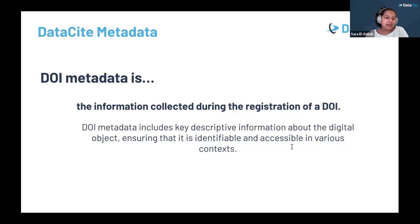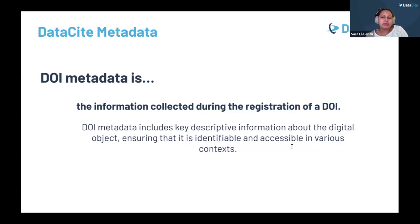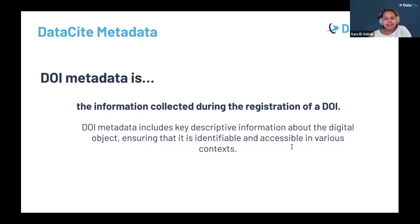There are several key benefits. First, it ensures that the resource can be reliably identified and cited. It can enhance discoverability by making the resource visible to services and platforms that index research outputs. This improves interoperability, enabling systems and platforms to work together seamlessly and making your metadata compatible with global research infrastructures, so research outputs can be found, cited, and reused on a global level.